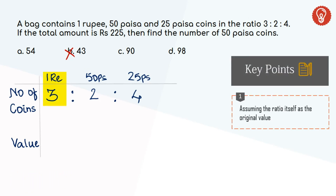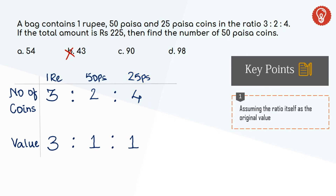Let's say you have 1 rupee coins and they are 3 in number — their value would be 3 rupees. Now, if you have 50 paise coins and they are 2 in number, their value would be 1 rupee. Similarly, if you have 25 paise coins and they are 4 in number, their value would also be 1 rupee. So, the total value of the bag under this assumption is 3 + 1 + 1, which is 5 rupees.